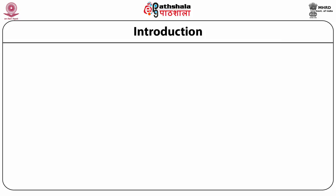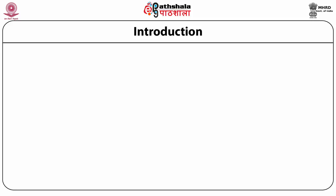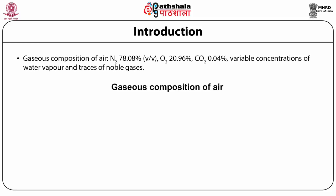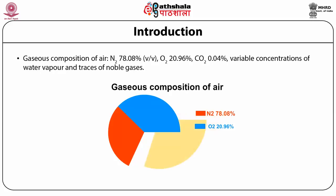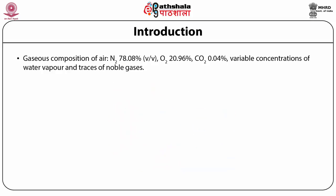In this chapter we are going to discuss modified atmospheric packaging (MAP) and controlled atmospheric packaging (CAP). As we all know, air contains 78.08% nitrogen, 20.96% oxygen, 0.04% carbon dioxide, and traces of noble gases and water vapour.